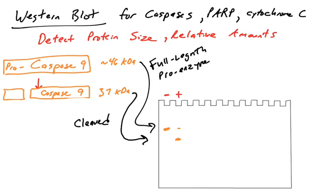Using gel electrophoresis to separate proteins based on their size, and then using an antibody in the Western blot to detect those proteins, will allow you to detect full-length caspases and cleaved caspases. The cleaved versions are the active versions. In this example, caspase 9 is cleaved by the apoptosome.